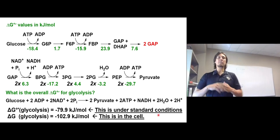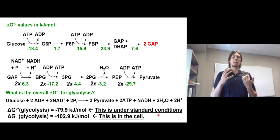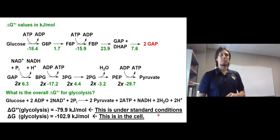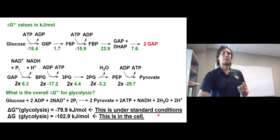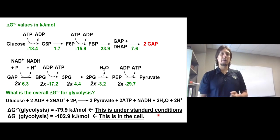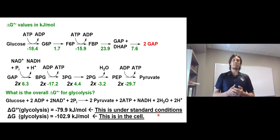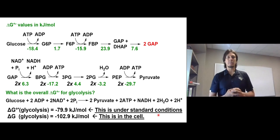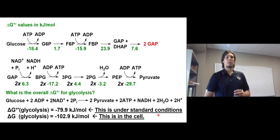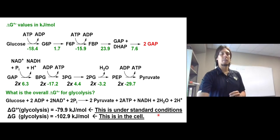That calculated value of negative 79.9 kilojoules per mole is under standard biological conditions, but in a cell this can go to negative 102.9 kilojoules per mole — a more negative number, meaning this is a more thermodynamically favorable pathway than calculated under standard conditions. Why that might be is something we'll discuss later in the video sequence.